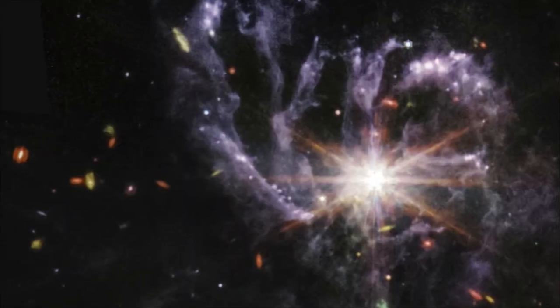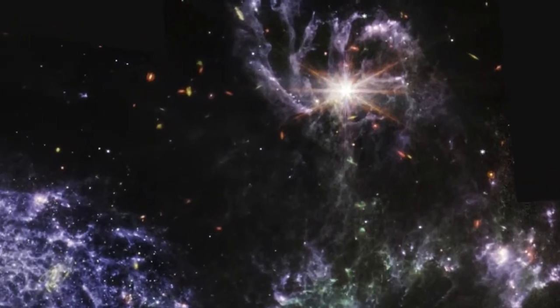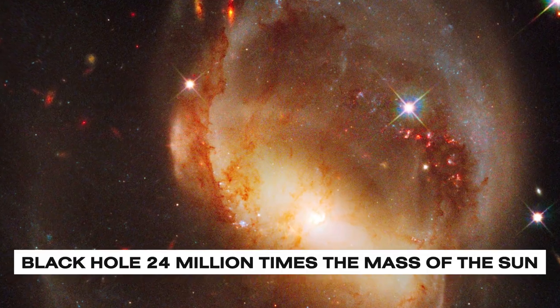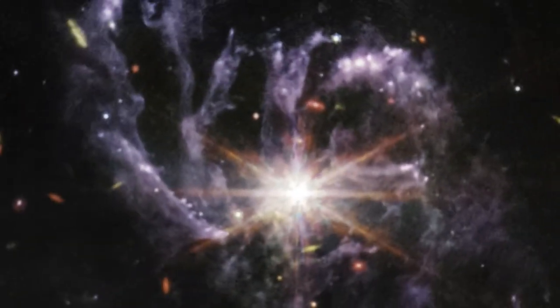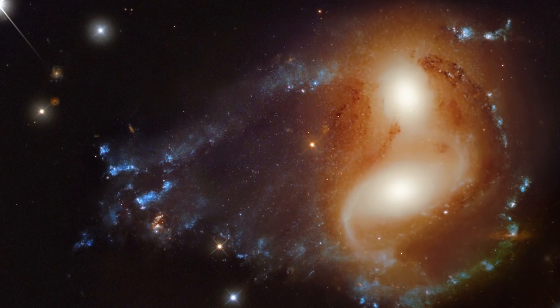Even today, NGC 7319, the topmost galaxy in this ensemble, harbors a supermassive black hole 24 million times the mass of the Sun. It radiates light energy equivalent to a staggering 40 billion suns, captivating our imagination.